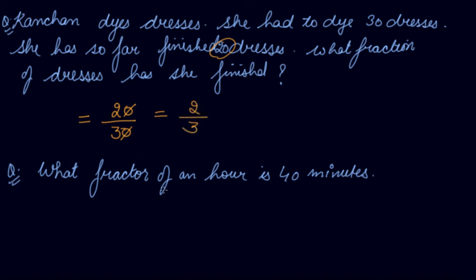What fraction of an hour is 40 minutes? In an hour, how many minutes do you have? 60. So, 60 is the denominator. They are asking what fraction of an hour is 40 minutes - 40 minutes out of 60. So, 40 becomes your numerator. 40 divided by 60 is the fraction.